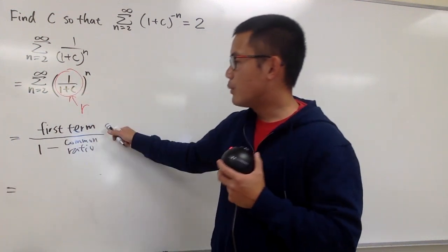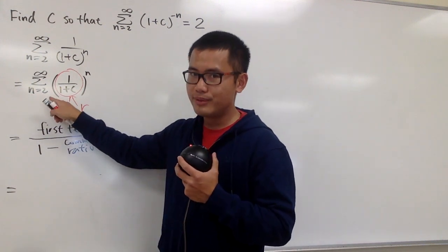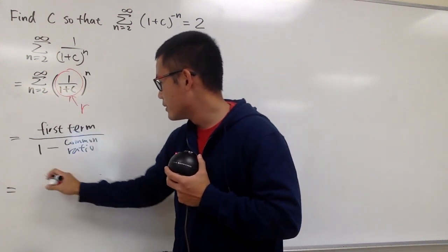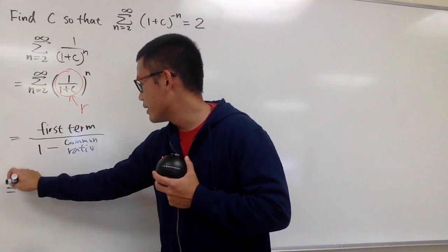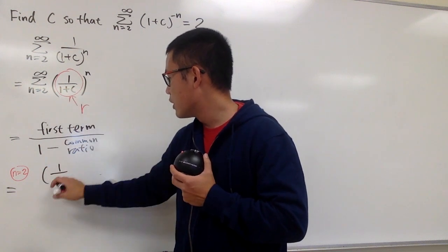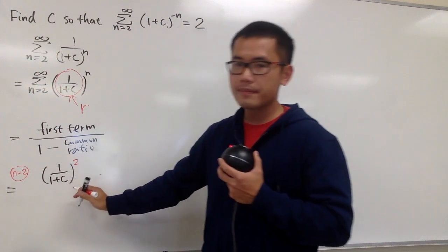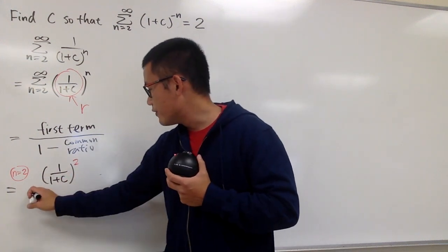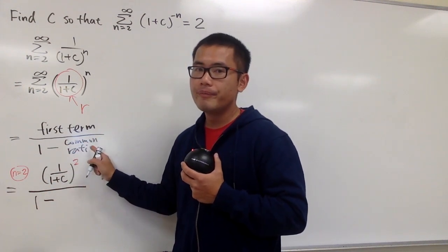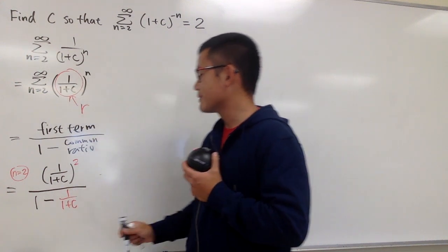Now I have to tell you what the first term is. Be careful — this is when n is equal to 2. So for the first term, you have to plug in 2 into this n. When n is equal to 2, on the top we will have 1 over (1 plus c) raised to the second power. This is the first term. And then we divide this by 1 minus the common ratio, which is precisely 1 over (1 plus c).